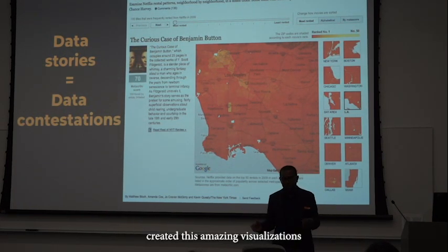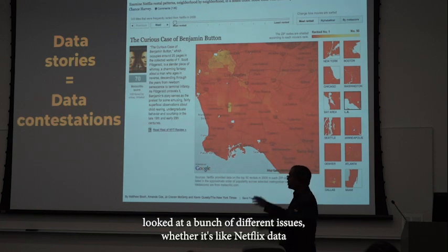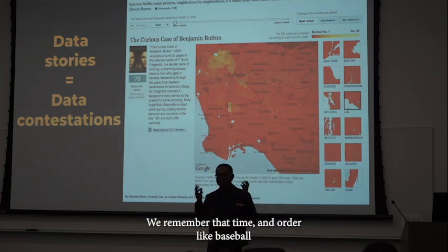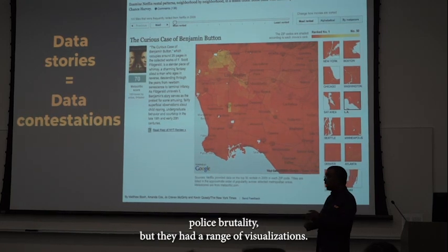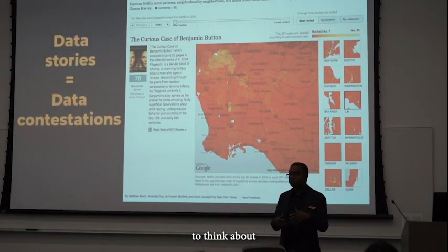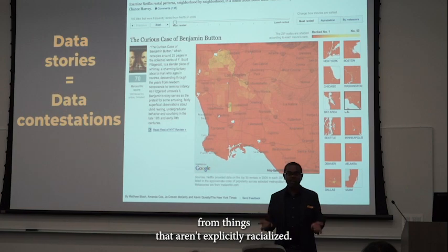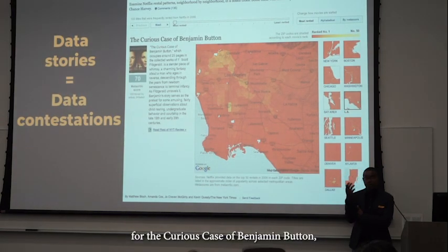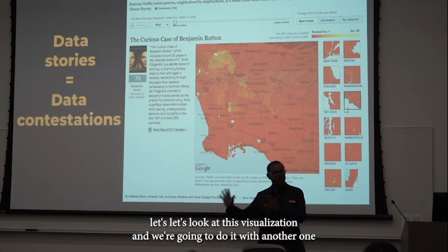The New York Times had created amazing visualizations in the early 2010s that looked at a bunch of different issues — whether it's Netflix DVD rental racial patterns, baseball statistics, or issues around police brutality. This particular visualization was offered to students as a way to think about how we can infer racial patterns from things that aren't explicitly racialized. It was the DVD rental pattern for The Curious Case of Benjamin Button, which at the time was a really popular movie. The teacher presents it as a way to contrast it with another visualization.